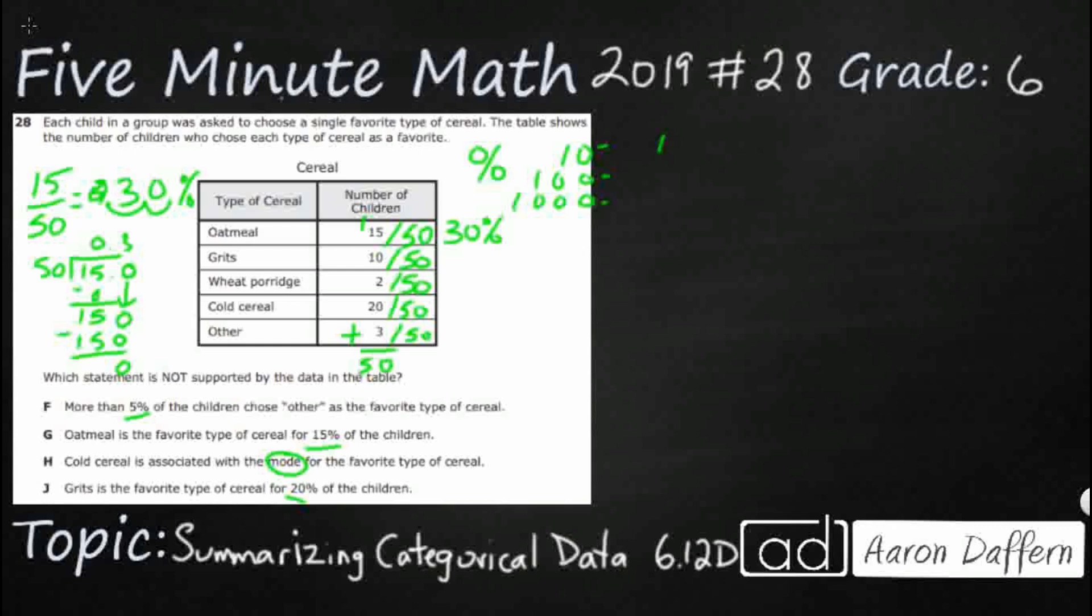Watch this. If I take my 15 50ths and actually make it a larger equivalent fraction, double it, guess what I'm going to get? 30 100ths, which is the same as this decimal, 30 100ths. And there's my two spots, 30%.